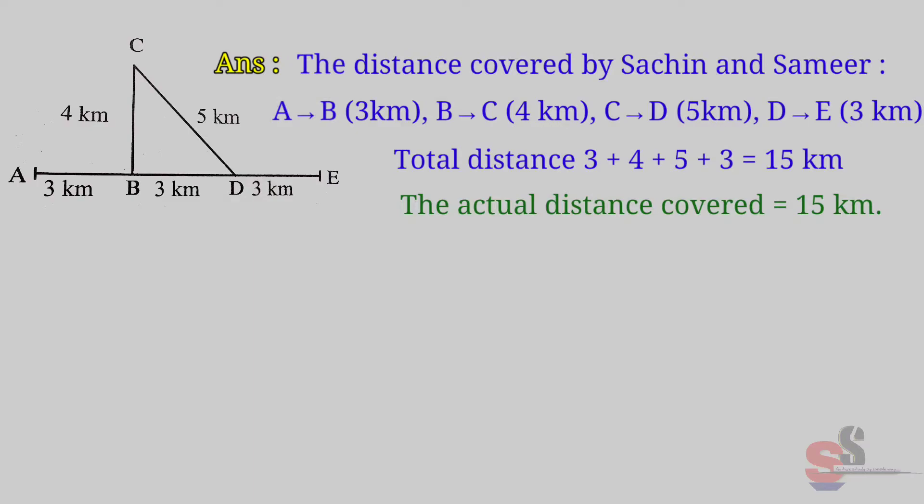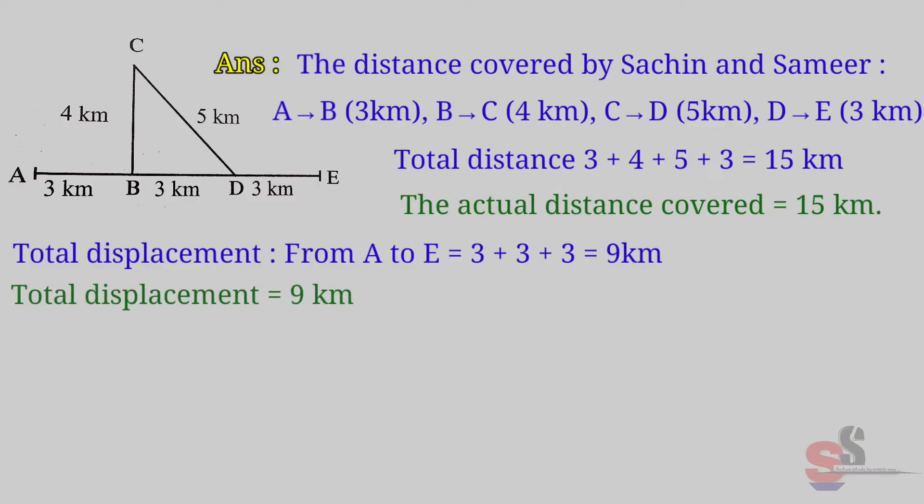Now we will see total displacement from A to E. That means A to B, B to D, and D to E. That is 3 plus 3 plus 3 is equal to 9 km. Total displacement is equal to 9 km.